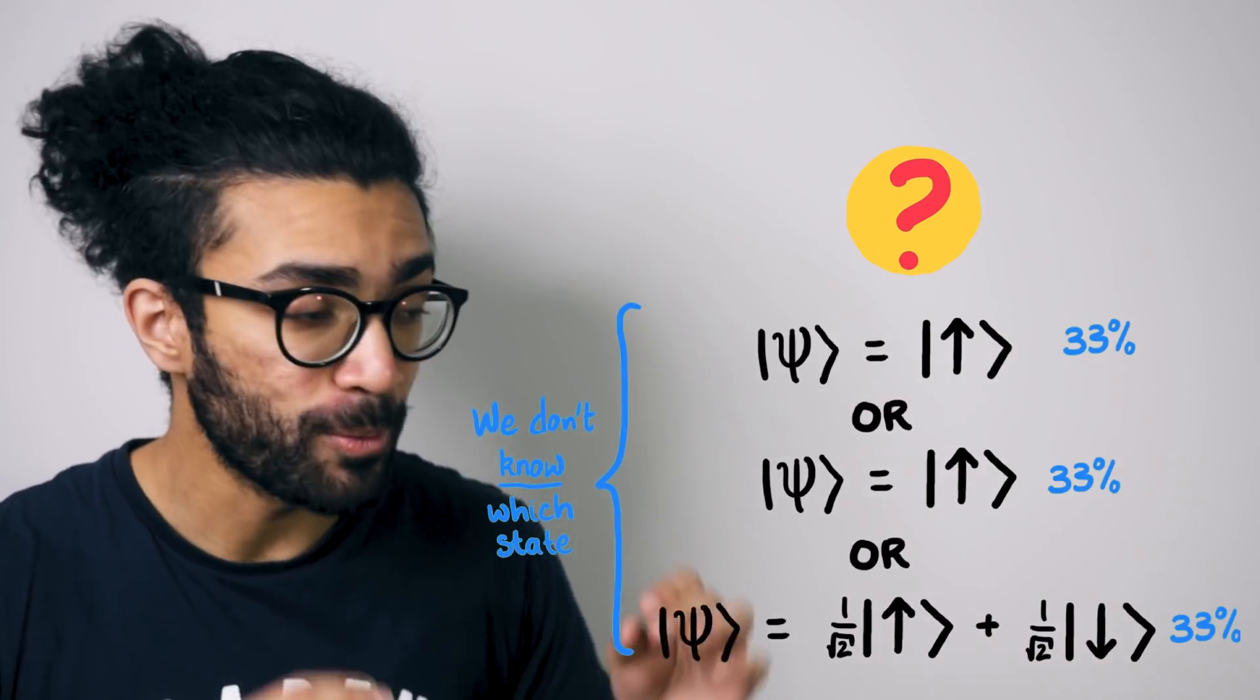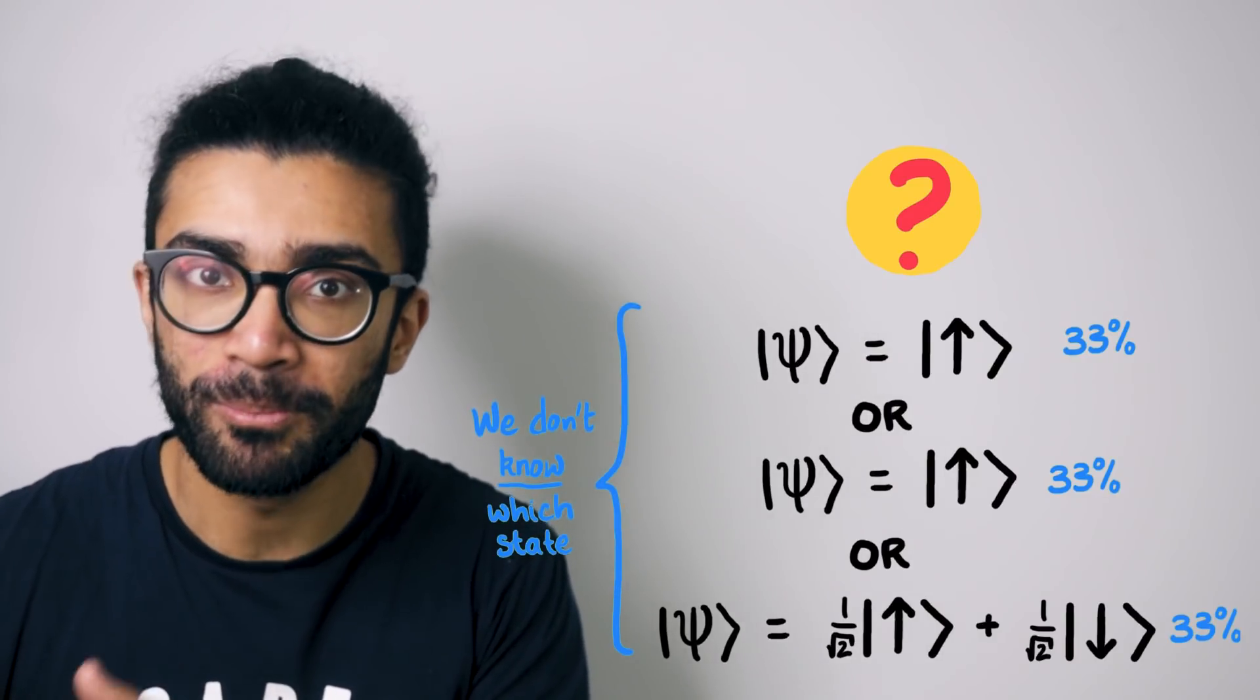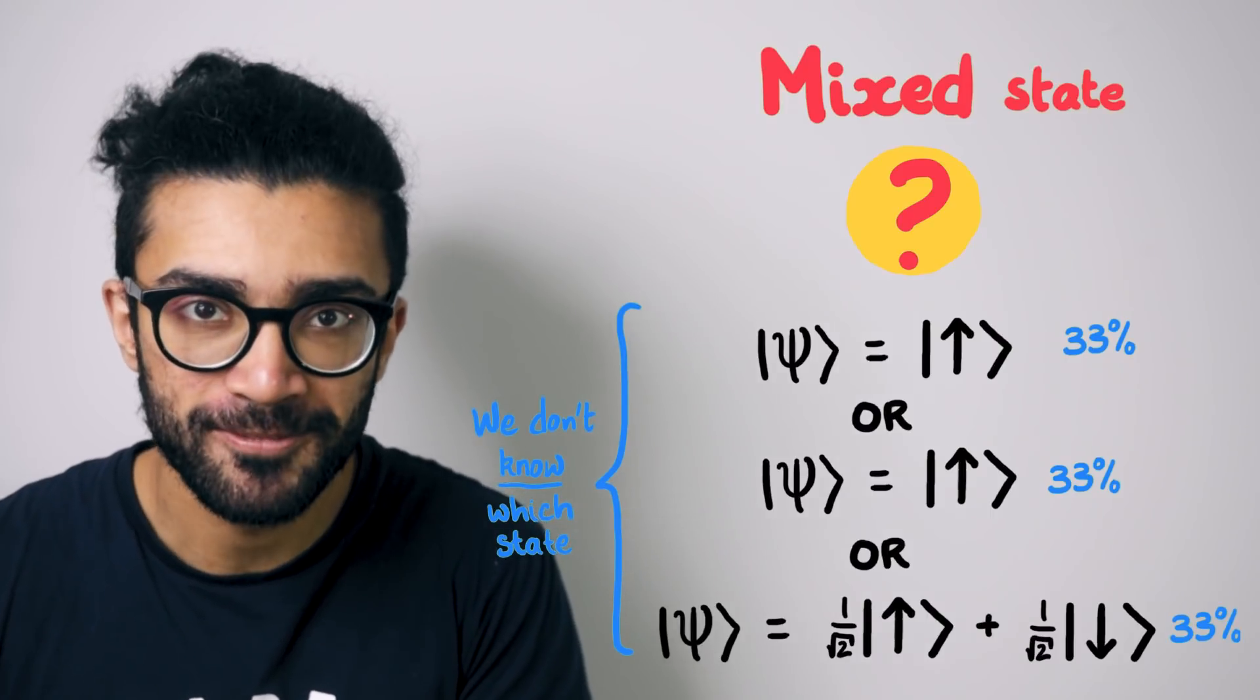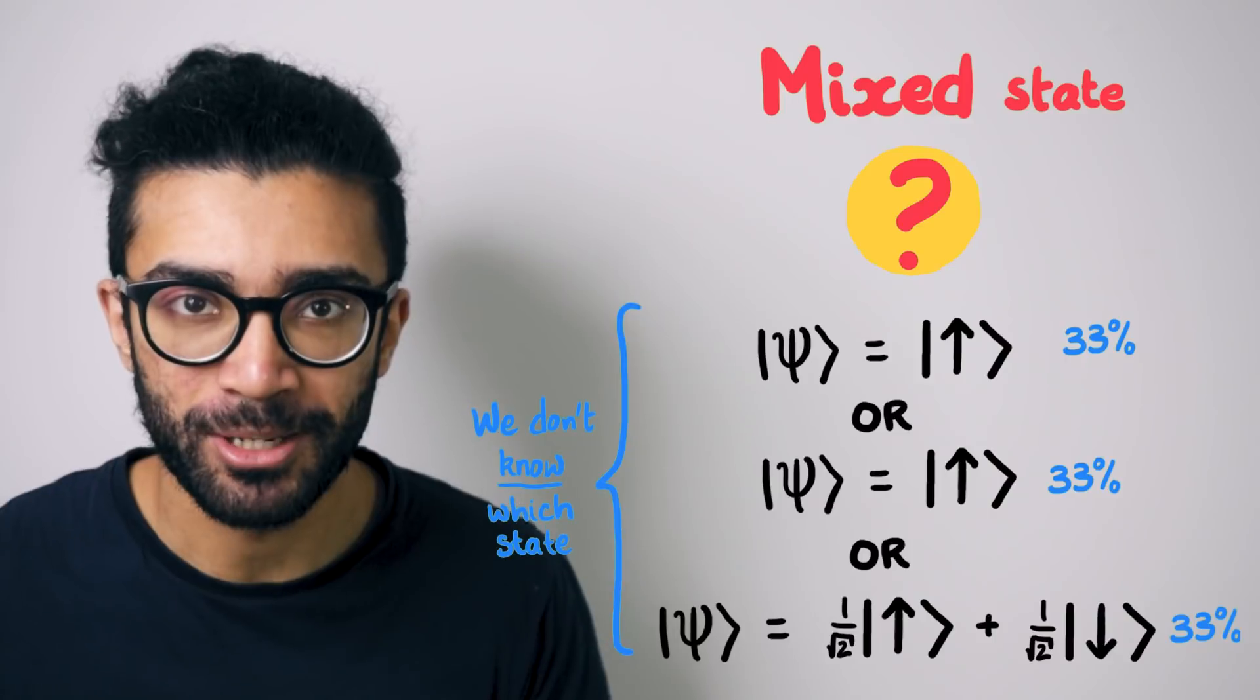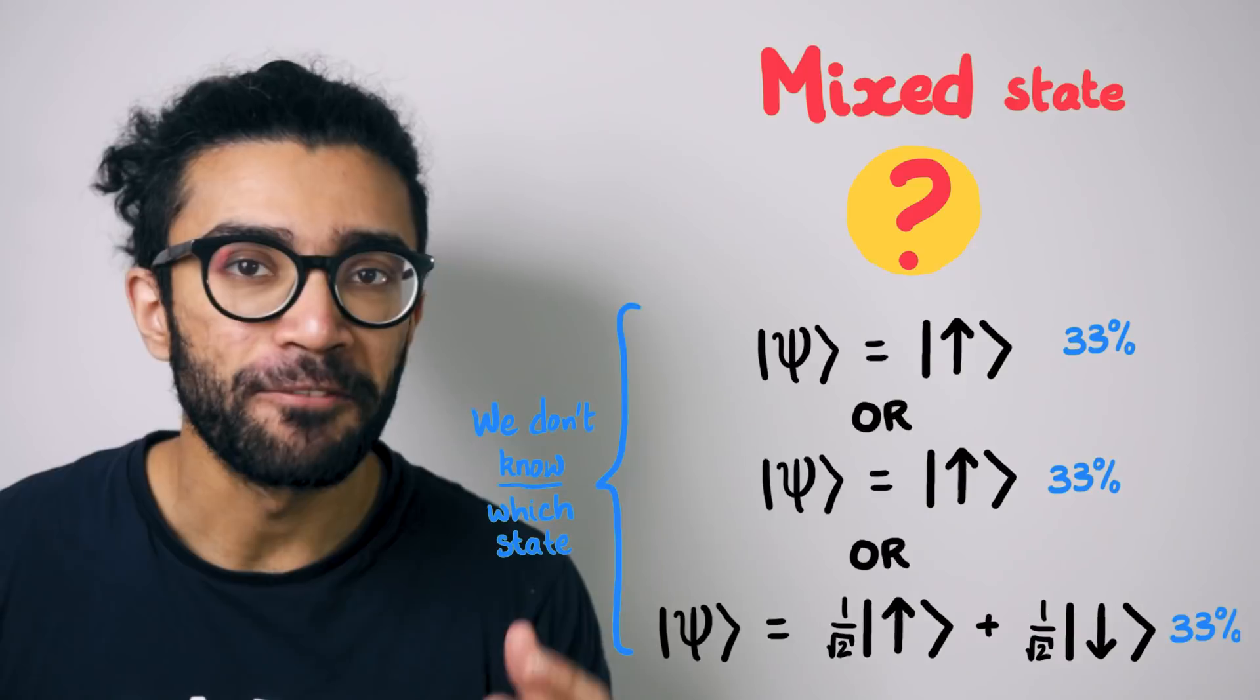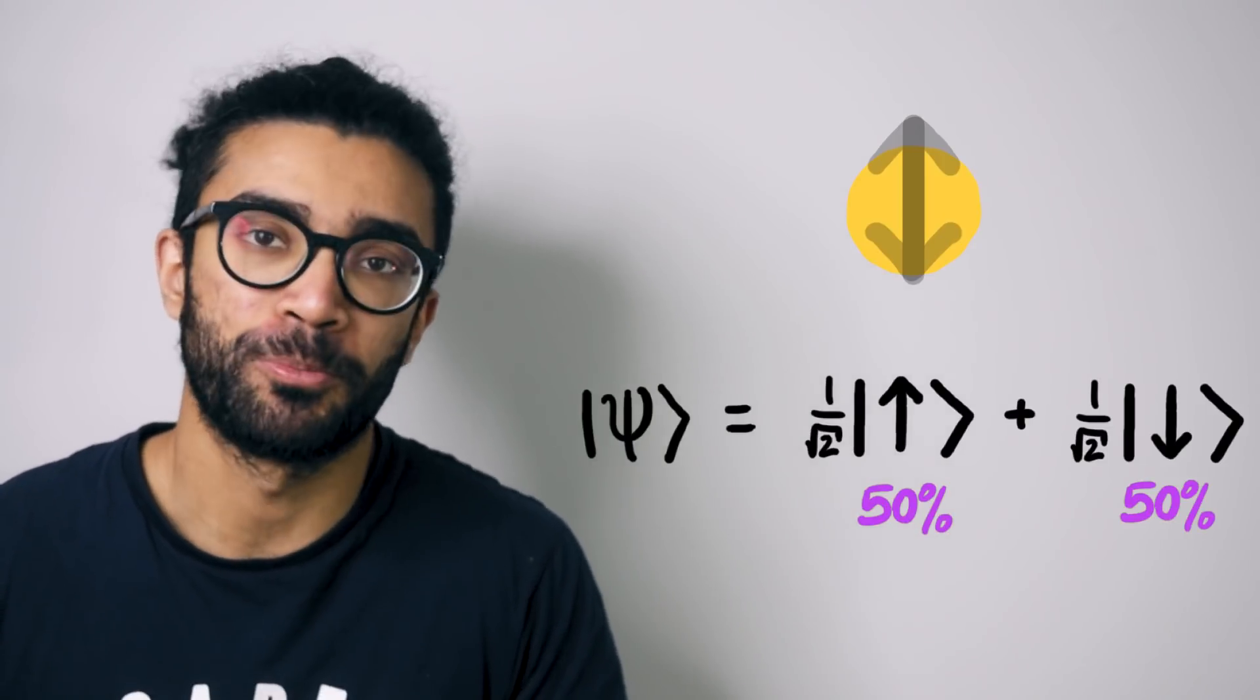Well, if our system is like this, where we don't know which psi state it's in, we just know the probabilities of it being in particular psi states, then we call this a mixed state. Now, these probabilities are purely because of our lack of knowledge about the system. We don't know this information, perhaps we don't have access to it. They're fundamentally different to the quantum probabilities that arise because of superposition, say.